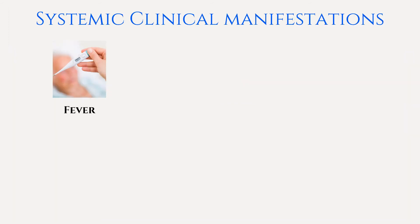Moving on to the systemic signs and symptoms of inflammation. Fever is caused by cytokines released from neutrophils and macrophages. The cell-derived inflammatory mediators video in this series discusses prostaglandin's ability to affect the temperature regulation center in the hypothalamus. The shivering and chills sometimes experienced with fever is the body raising its temperature to meet the new thermostatic set point. Fever increases metabolism, which results in tachypnea and tachycardia.